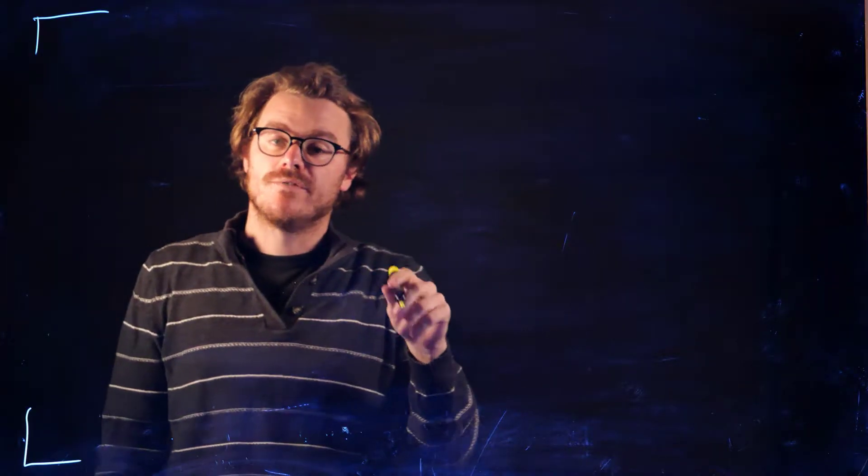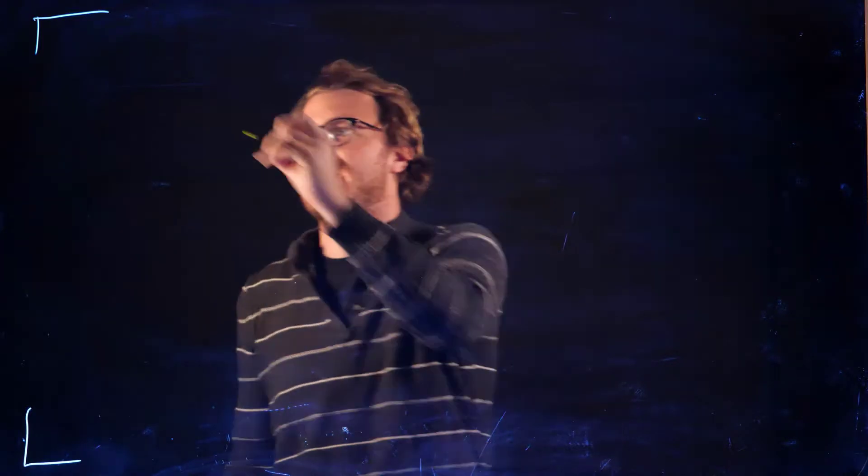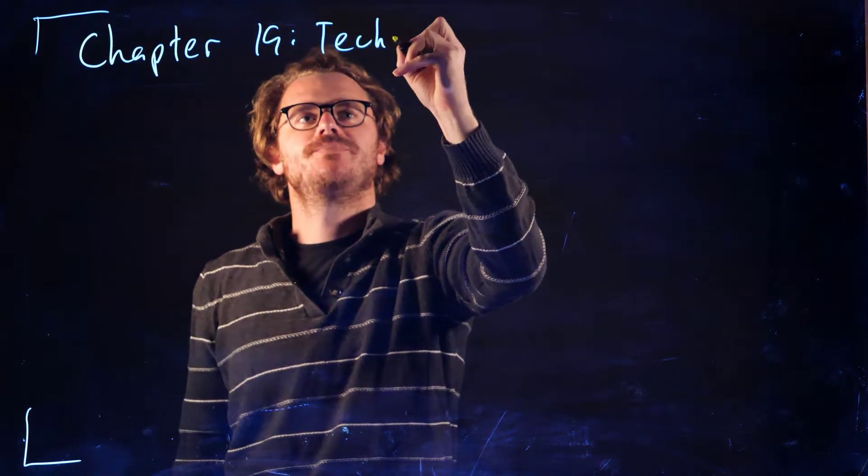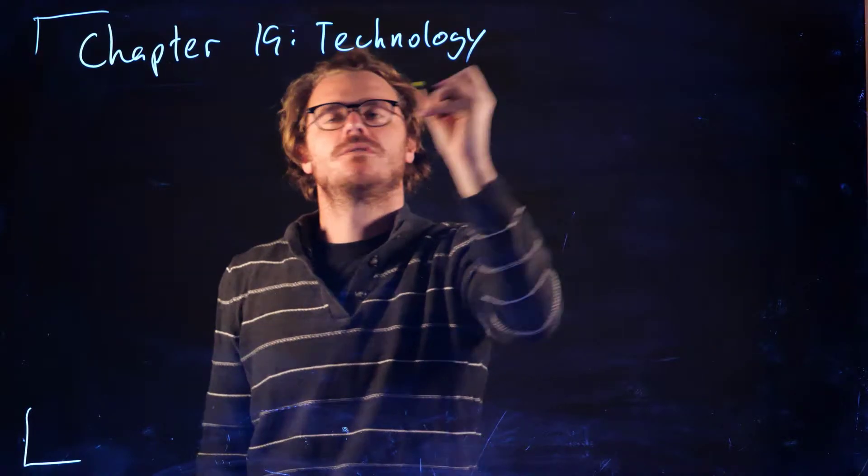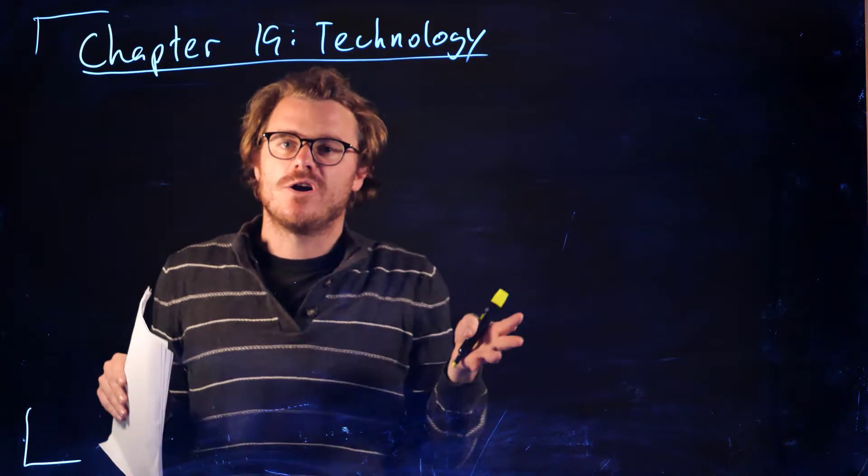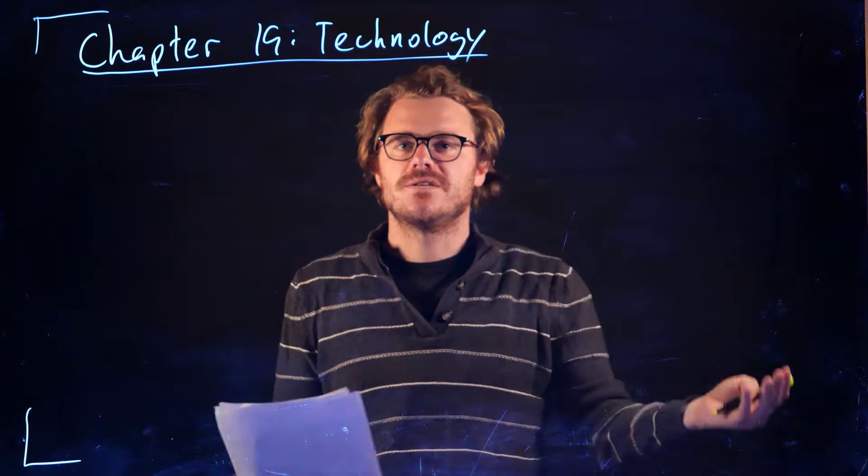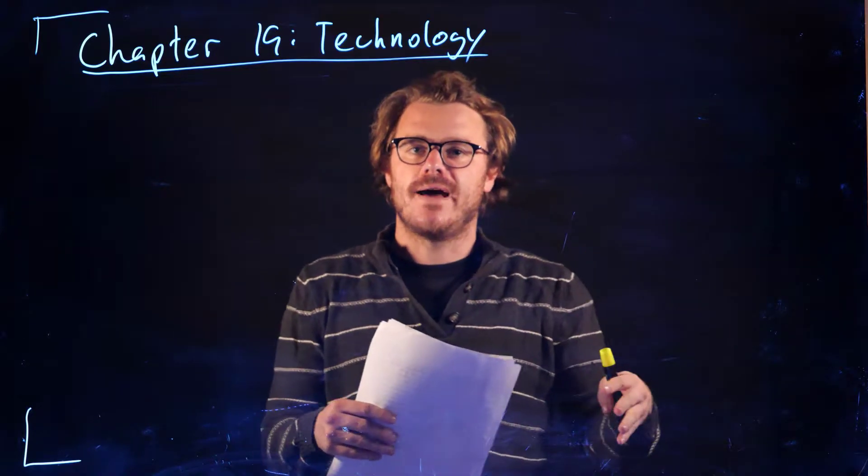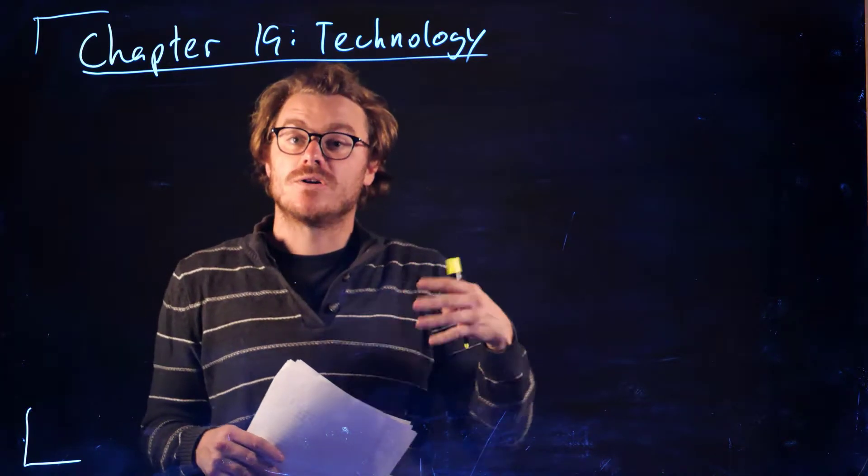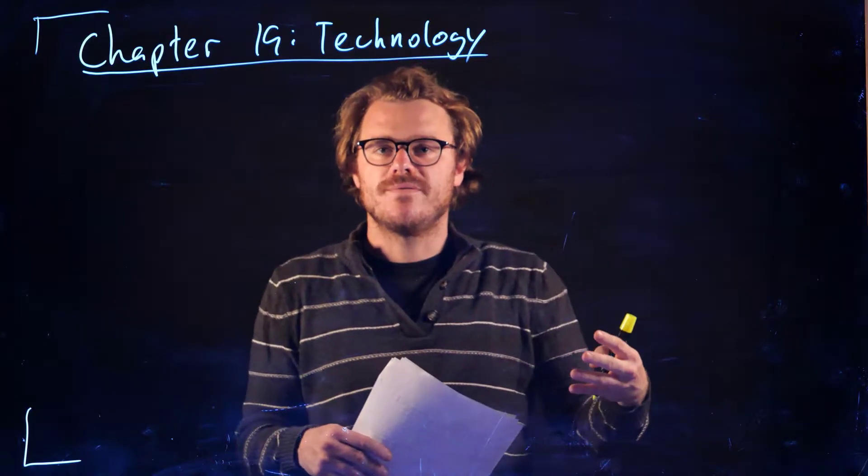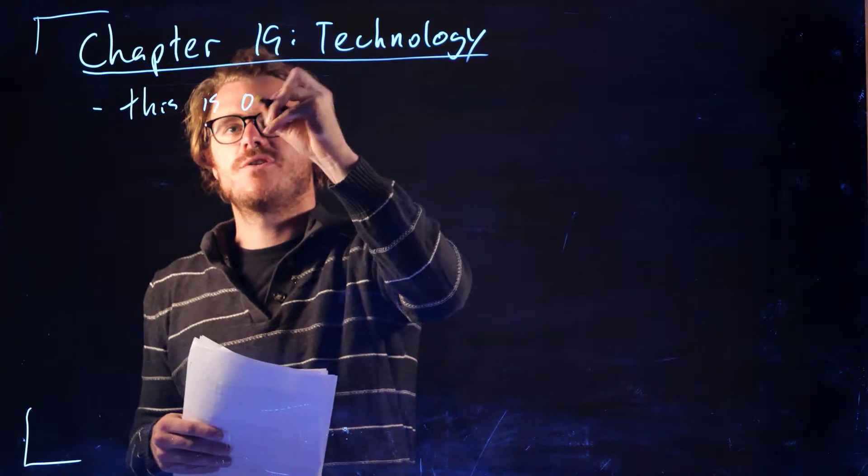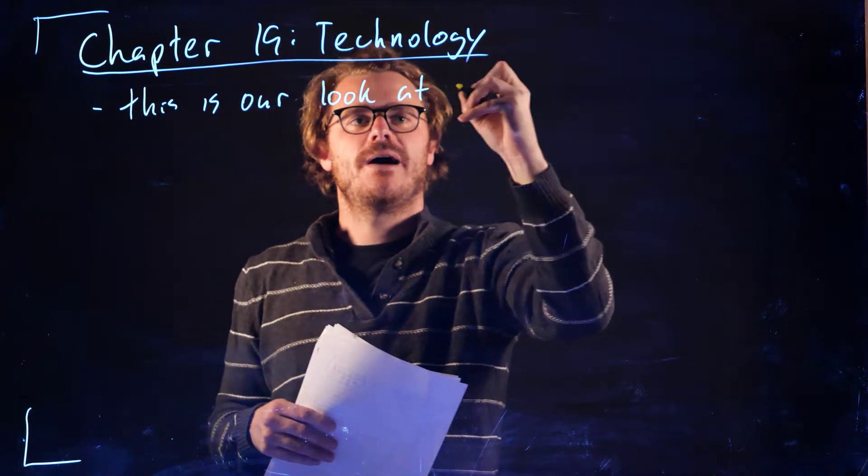In this module we're going to cover technology, which is Chapter 19 in our text. Really this chapter is our first look at producer theory. Up until now it's been kind of what we might call consumer theory - how consumers make decisions about their optimal bundle and things like that. Now we're going to take a very similar look at producer theory in terms of how producers maximize profits or alternatively minimize costs. So this is our first look at producer theory.